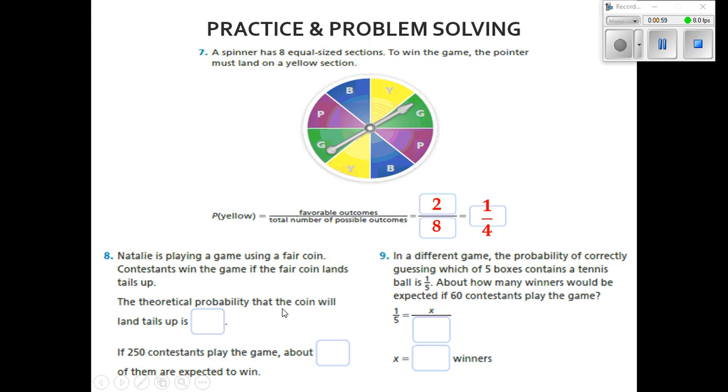The theoretical probability that the coin will land tails up is, well, a coin only has two sides, and if we want it to land on tails, it will land on it 50% of the time or half the time.